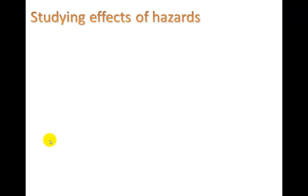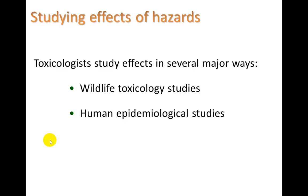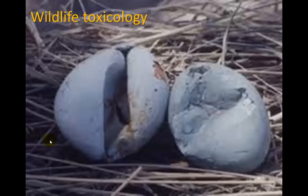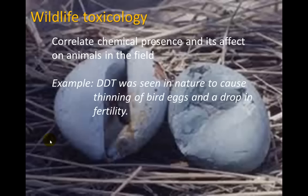Let's study some of the effects of hazards and the ways toxicologists study them. They study effects in several major ways: wildlife toxicology studies, human epidemiological studies, and dose-response studies in the lab using animal testing. In wildlife toxicology, we correlate chemical presence in the environment with its effect on animals in the field. For example, DDT was seen in nature to cause thinning of bird eggs and a drop in fertility — that's an example of wildlife toxicology.